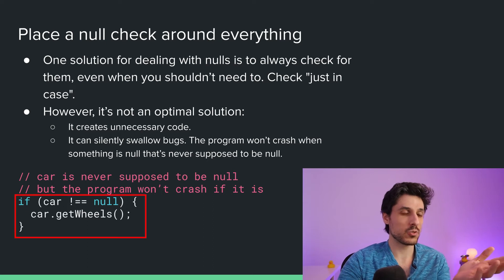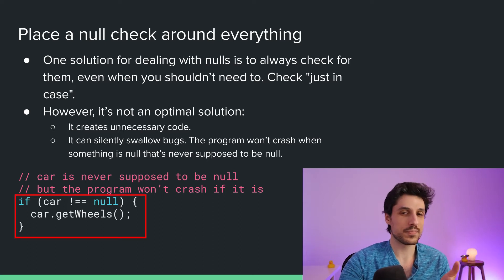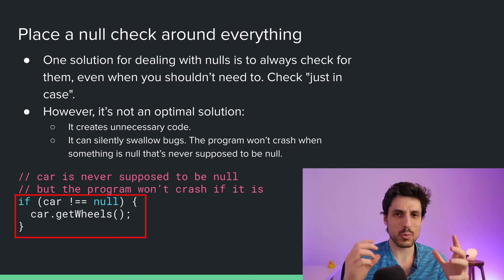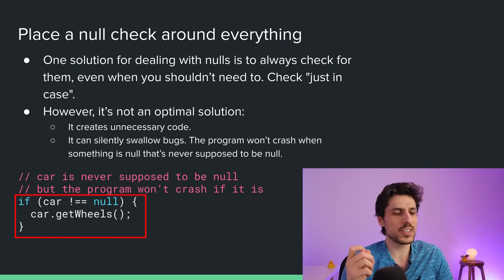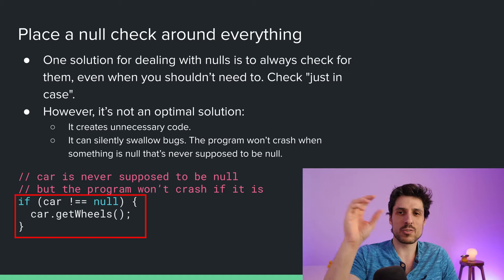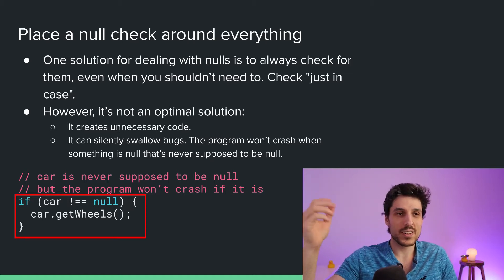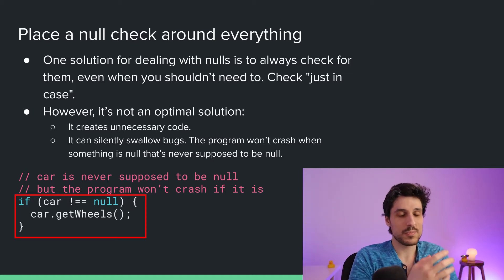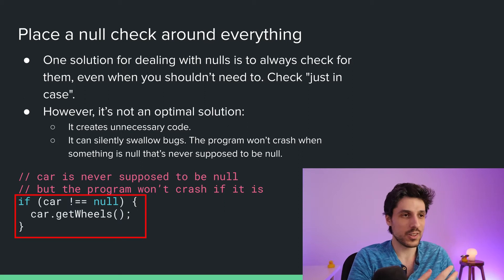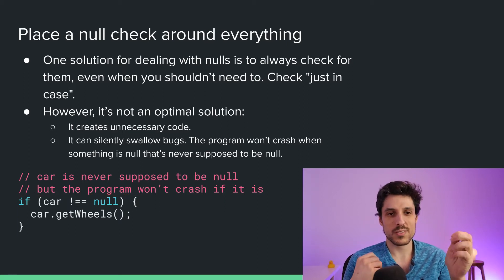Here's what the code would look like. A null check is just a condition that asks: is this null? And if it is, then don't do the thing; otherwise do the thing. This can work.